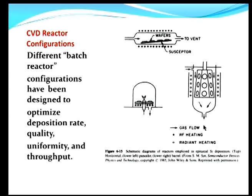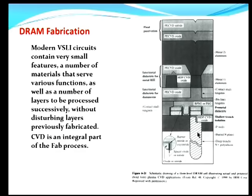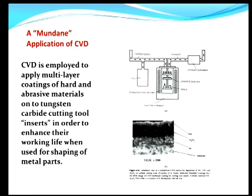Different kinds of reactor configurations are shown to obtain CVD films, and this again demonstrates the capability of CVD to provide conformal coverage. CVD is also used to obtain cutting tool coatings for machine shop operations — CVD is very effective in obtaining multi-layer coatings of aluminum oxide, carbide, and nitride to enhance tool life in cutting operations. So CVD is used in much more mundane processes as well.